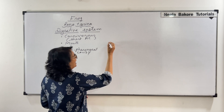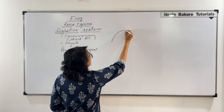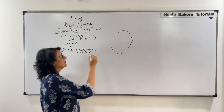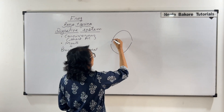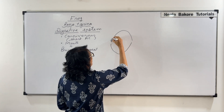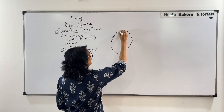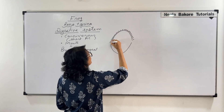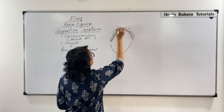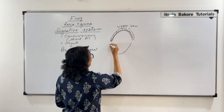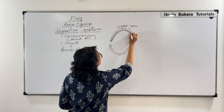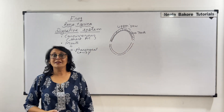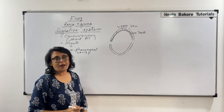Let us draw the diagram to understand how this works. Suppose this is the upper jaw and this is the lower jaw. In case of frogs, teeth are present only in the upper jaw, and these teeth are all of the same shape and size, so we call it homodont, and they are superficially attached. These are called maxillary teeth because the upper jaw bone is called the maxilla, and this cavity is the buccopharyngeal cavity.